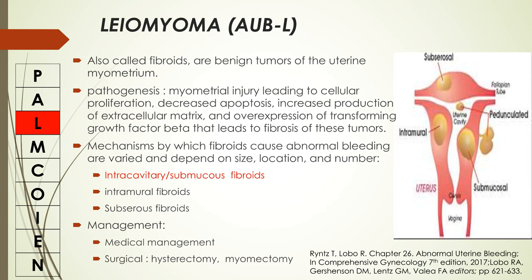Next is AUB-L, or AUB secondary to leiomyoma or fibroids, which are benign tumors of the uterine myometrium. The pathogenesis involves myometrial injury leading to cellular proliferation, decreased apoptosis, increased production of extracellular matrix, and overexpression of transforming growth factor beta leading to fibrosis. There are three types of fibroids: intracavitary or submucosal, intramural, and subserosal, but mostly the intracavitary or submucosal type causes abnormal uterine bleeding.